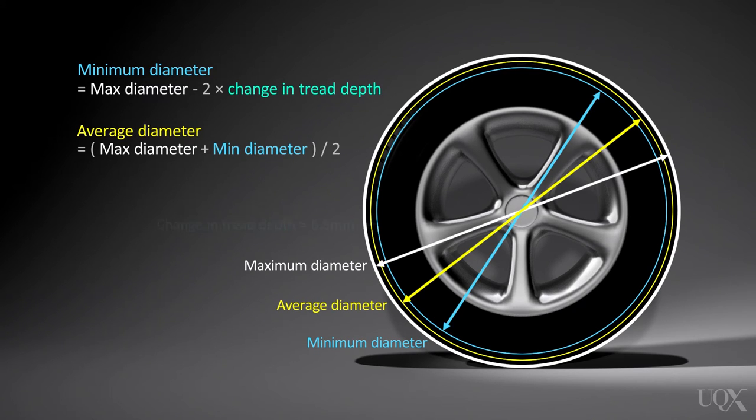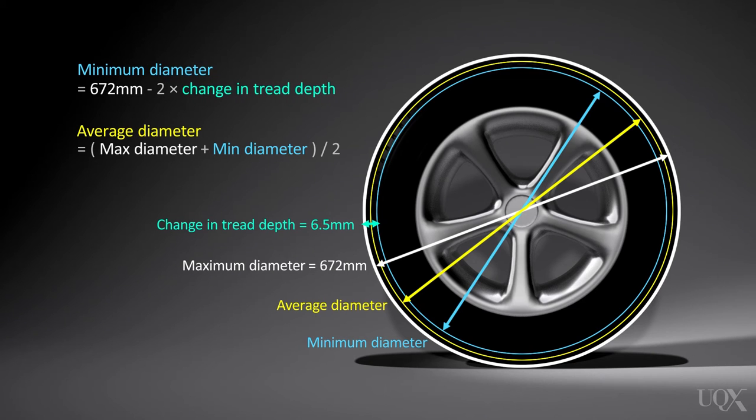Let's put some numbers to this calculation. We determined earlier that the maximum diameter is 672 millimetres. From this diagram, the minimum diameter is the maximum diameter less twice the wear of the tread depth, or 672 minus 2 times 6.5 millimetres, which gives 659 millimetres.